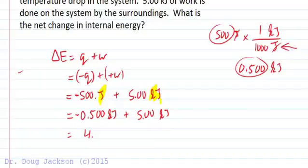One thousand has an unlimited number of significant figures because it's a definition. So here we get 4.50 kilojoules is the net change and that's a positive change in energy for the system.